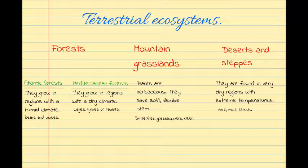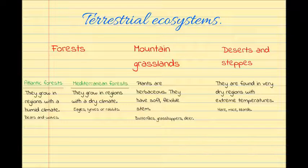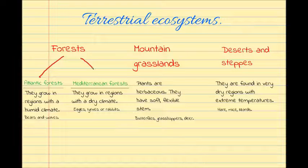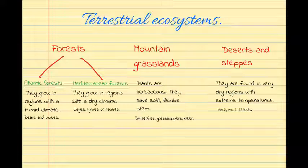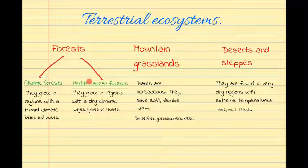In terrestrial ecosystems you are going to find three different ecosystems. First, forests, which are classified into Atlantic forests and Mediterranean forests. Atlantic forests grow in regions with a humid climate, and you are going to find different animals such as bears and wolves. Mediterranean forests grow in regions with a dry climate, and you are going to find tickles, lynxes, or rabbits.